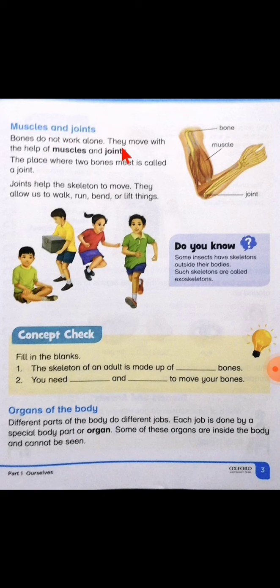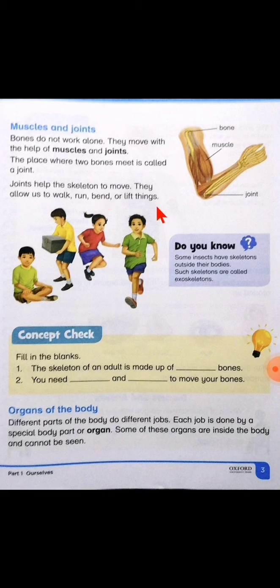Bones do not work alone. They move with the help of muscles and joints. The place where two bones meet is called a joint. Joints help the skeleton to move — they allow us to walk, run, bend, or lift things. بیٹا، look at this picture — یہ bone ہے، یہ ہمارا muscle ہے اور یہ ہمارا joint ہے۔ جہاں پہ two bones ملتی ہیں، جو دو bones کو ملاتا ہے اس کو ہم joint کہتے ہیں۔